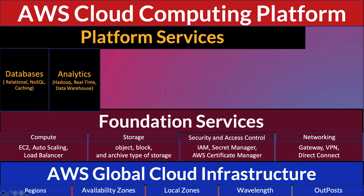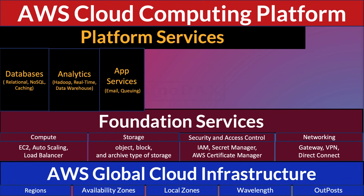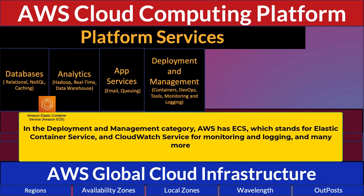Under Application Services, examples include SES — Simple Email Service — and SNS — Simple Notification Service — among many others. In the deployment and management category, AWS has ECS — Elastic Container Service — and CloudWatch Service for monitoring and logging, plus many more.